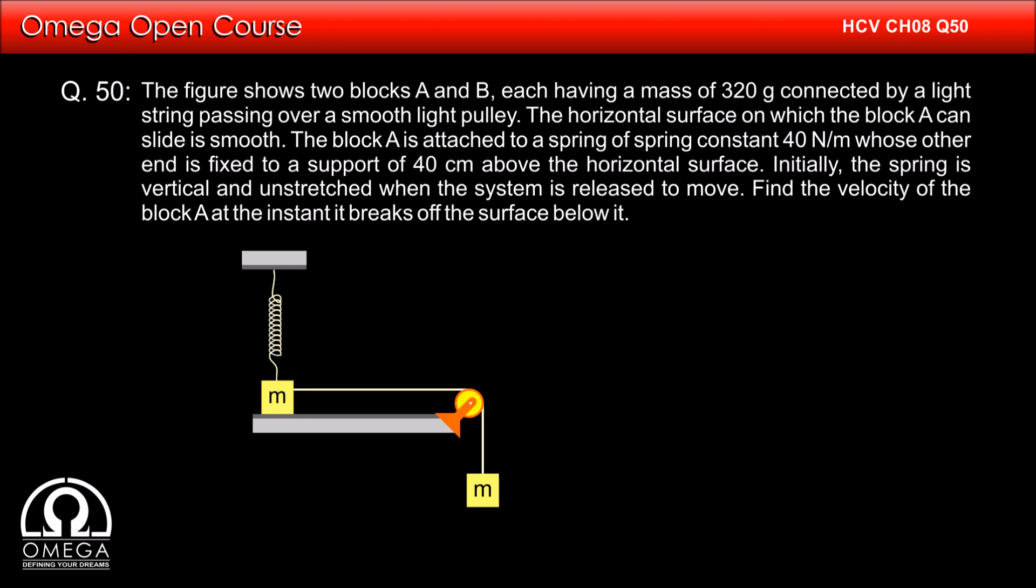The figure shows two blocks A and B, each having mass 320g connected by a light string passing over a smooth light pulley. The horizontal surface on which block A can slide is smooth.